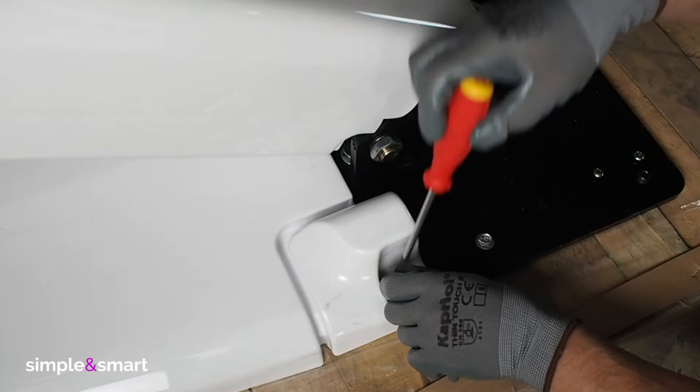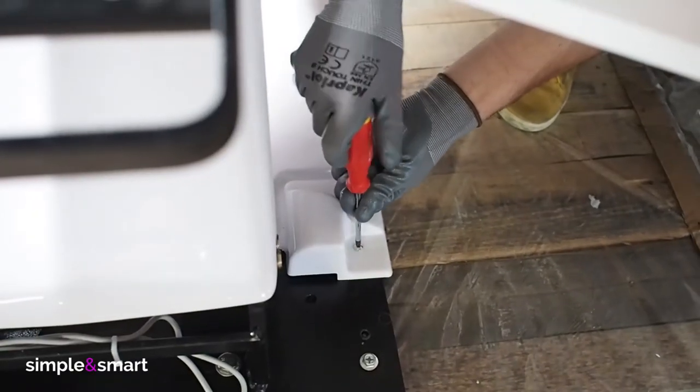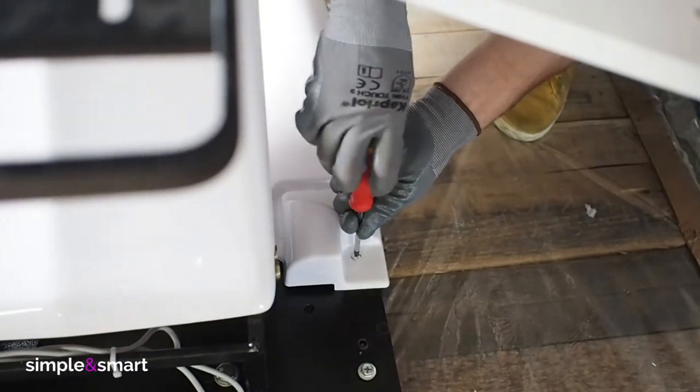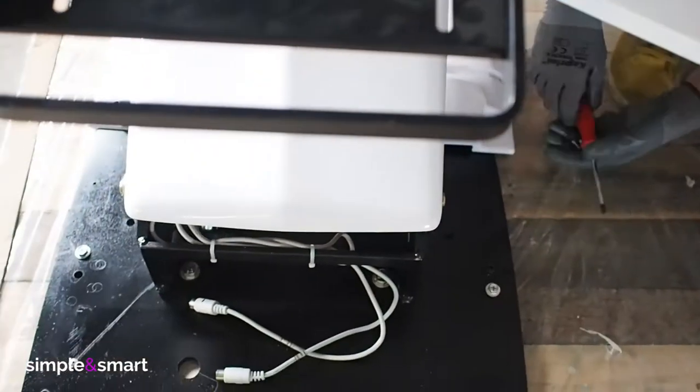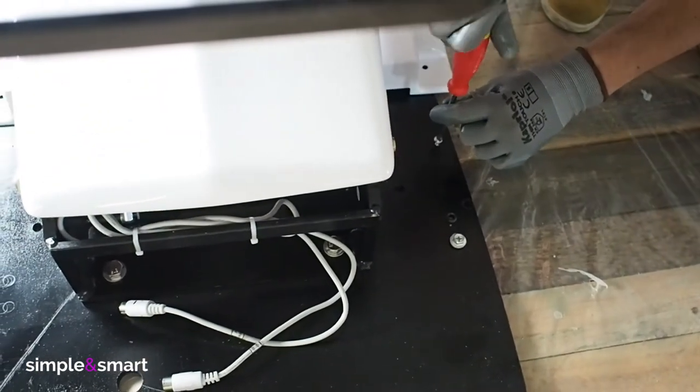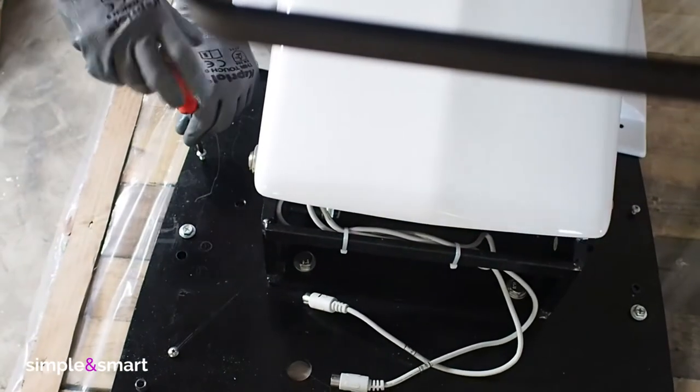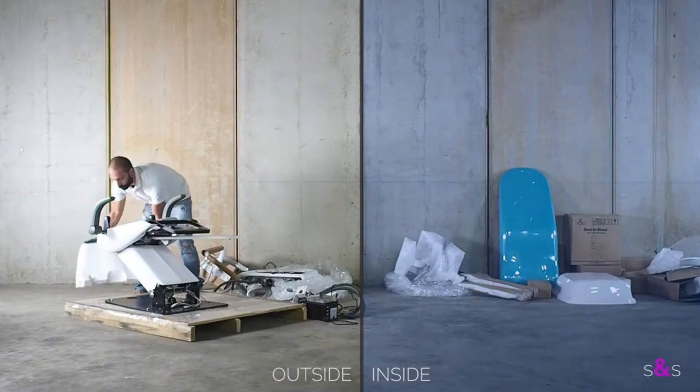Take out the two screws that keep the back plastic cover of the chair. Remove the cover and place the back of the screws on a metal surface. Bring the cover inside the clinic.